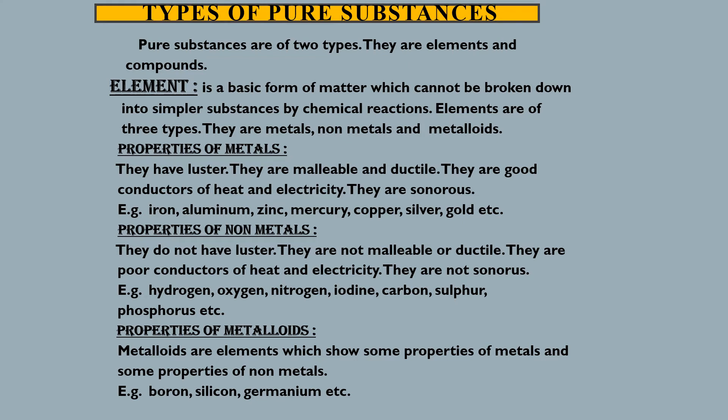Properties of metalloids are: metalloids are elements which show the properties of both metals and non-metals. Examples include boron, silicon, germanium, etc. This is a revision from topic 1 of the same lesson.